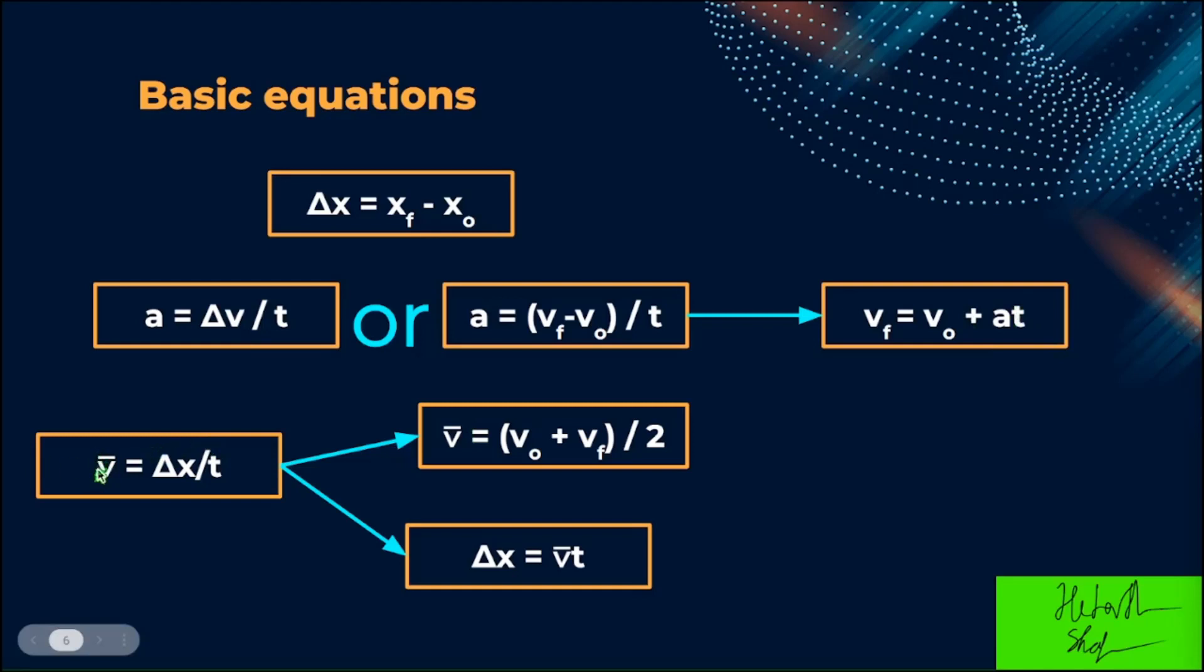Then we have v bar, which is average velocity, equals displacement over time, or delta x over t. And since this is average, we can do v bar equals v naught plus v sub f, or initial velocity plus final velocity, divided by 2, since average velocity is the average of the two velocities.